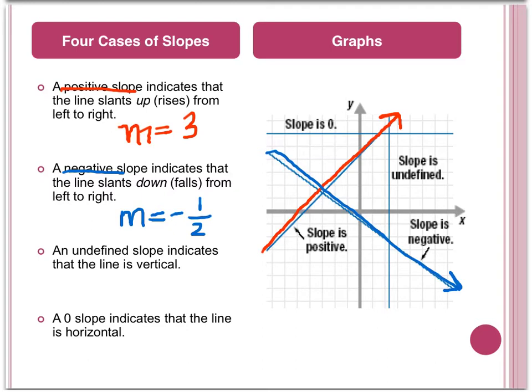Next, we have an undefined slope. This will be illustrated using the green on the graph. And if we were to have an example, this would be finding m equaling any number divided by zero. This is a vertical line.